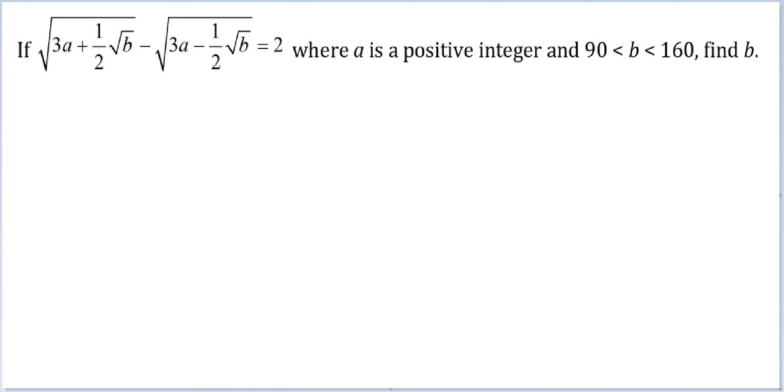Let's look at this question: √(3a + √b/2) - √(3a - √b/2) = 2, where a is a positive integer and b lies in the range 90 to 160. Find the value of b.